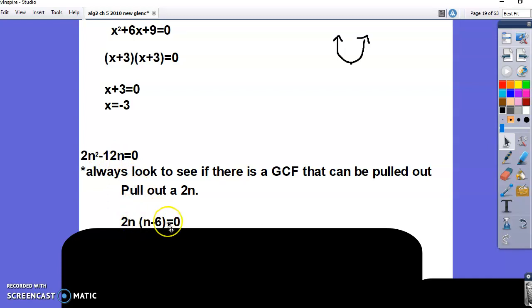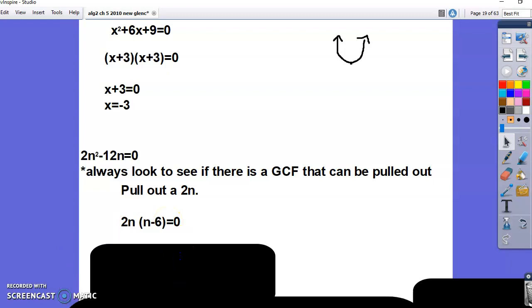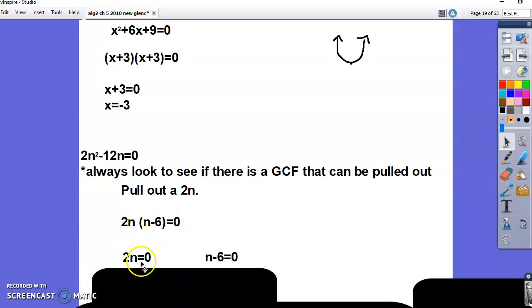These are still two factors that need to be set equal to 0 and then solve. The first one would be 2n equal to 0. The other one is n minus 6, set it equal to 0 and then solve for n. This first one is n is 0 and then this one is n is 6. You can still graph this out. You're going to see it's crossing the x-axis at 0 and 6.